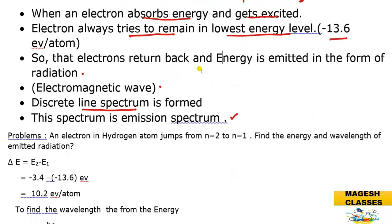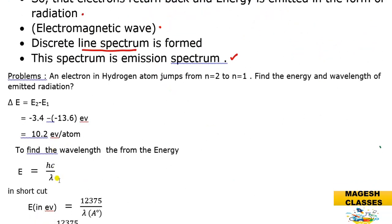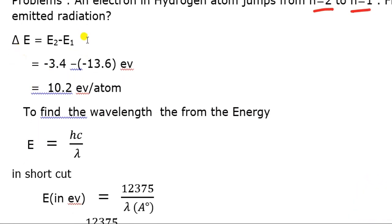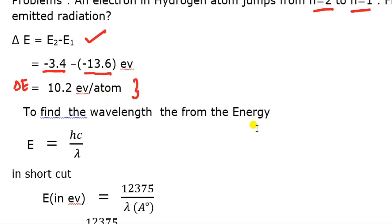Let us discuss problems for understanding. An electron in a hydrogen atom jumps from n=2 to n=1. Find the energy and wavelength of the emitted radiation. For the energy difference: ΔE = E2 − E1 = (−3.4) − (−13.6) = +10.2 electron volt per atom. So the energy emitted is 10.2 electron volt.